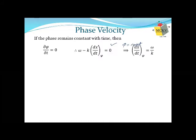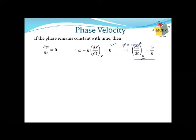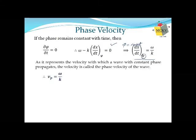From that, we can write dx/dt at constant phase equals ω/k. Now, dx/dt is the rate of change of position with time — nothing but velocity. And this velocity occurs at the constant phase condition, so we call that velocity the phase velocity of the wave. Phase velocity vp = ω/k.